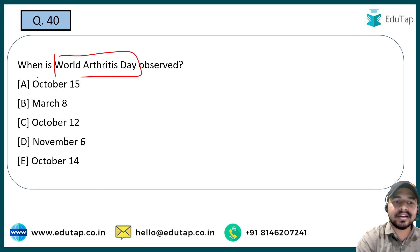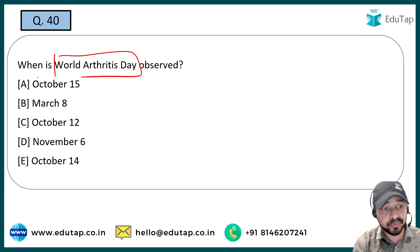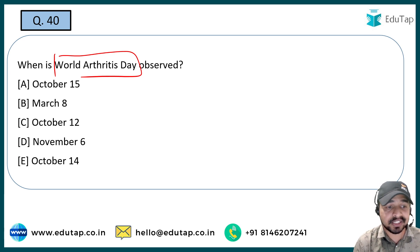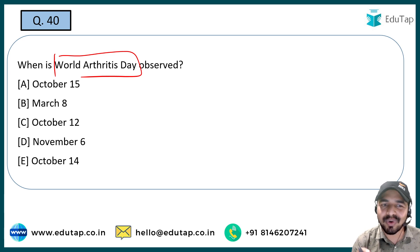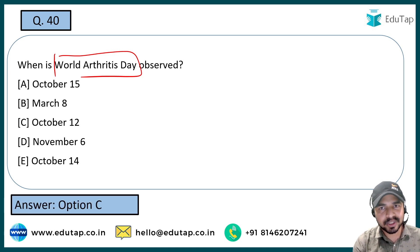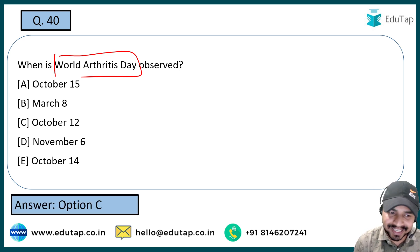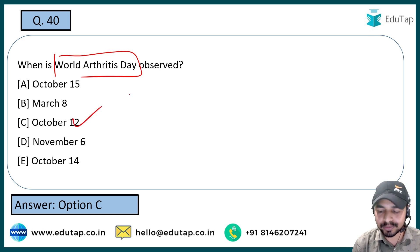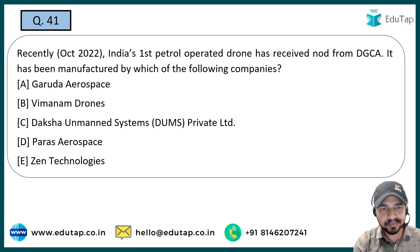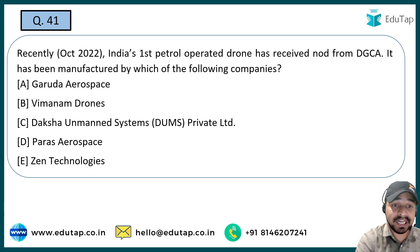The next question: World Arthritis Day — on which date is it observed? Options are October 15, March 8, October 12, November 6, or October 14. You are required to tell the date. It is being observed on 12th October every year.